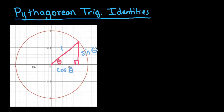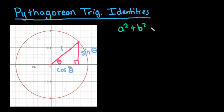Hi, for this video what I want to do is talk about the Pythagorean trig identities and show you where they originate. Since it's Pythagorean trig identities, that means it relates to the Pythagorean theorem. The Pythagorean theorem says that a squared plus b squared equals c squared, where c has to be the hypotenuse.